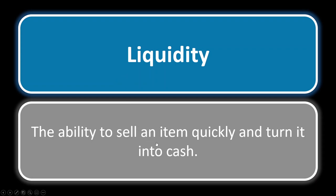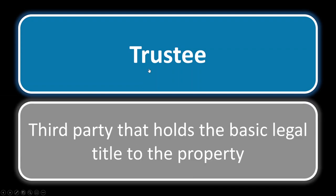Trustee. There are two things that might come to mind, but for real estate — specifically for California and the state exam — you should be thinking of trust deeds and who the trustee is. In a deed of trust, the trustee is that independent third party that holds the basic legal title to the property. The trustee has the power of foreclosure — the ability to sell the property and recoup money for the lender, the beneficiary — if the borrower defaults on the loan.